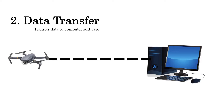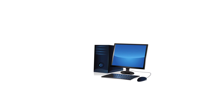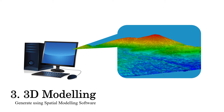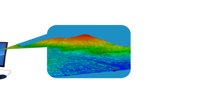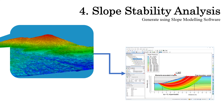Then, the data will be transferred to a computer software. The software will then create a 3D model. The information from the model can be extracted for slope stability analysis, and the results can be used to make decisions on landslide safety measures by the authorities.